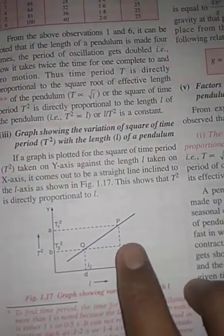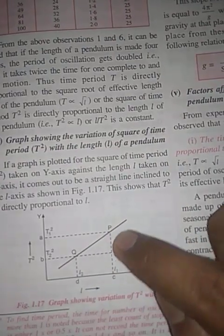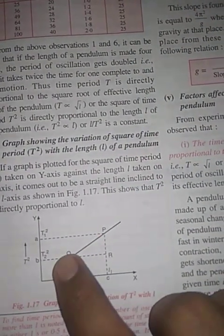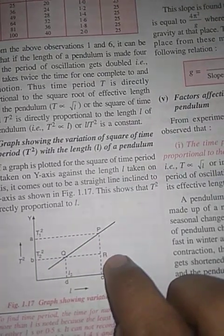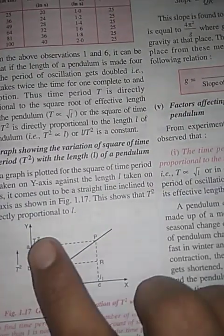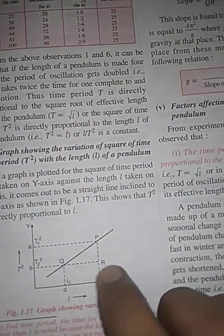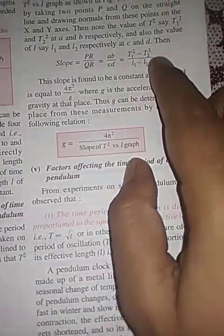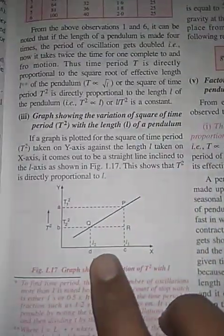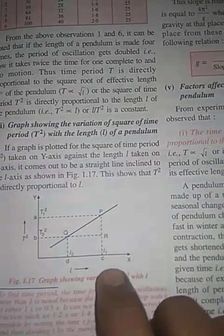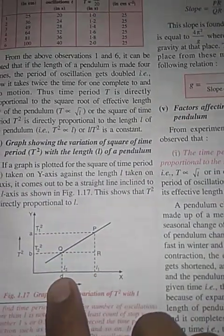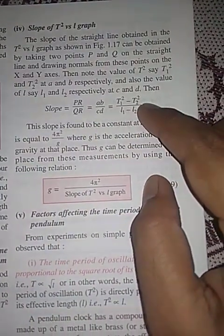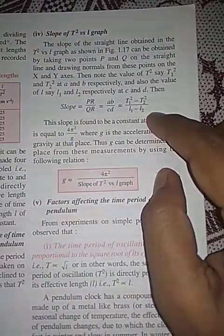The slope of this line is calculated as PR upon QR. In this graph, P and R give PR, and QR is the other segment. To calculate PR: T1² minus T2². To calculate QR: L1 minus L2. So the slope equals (T1² − T2²) / (L1 − L2).